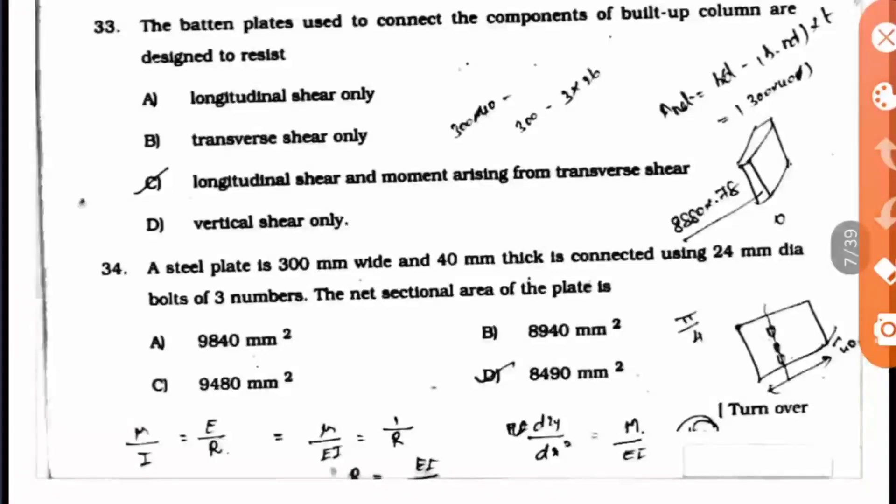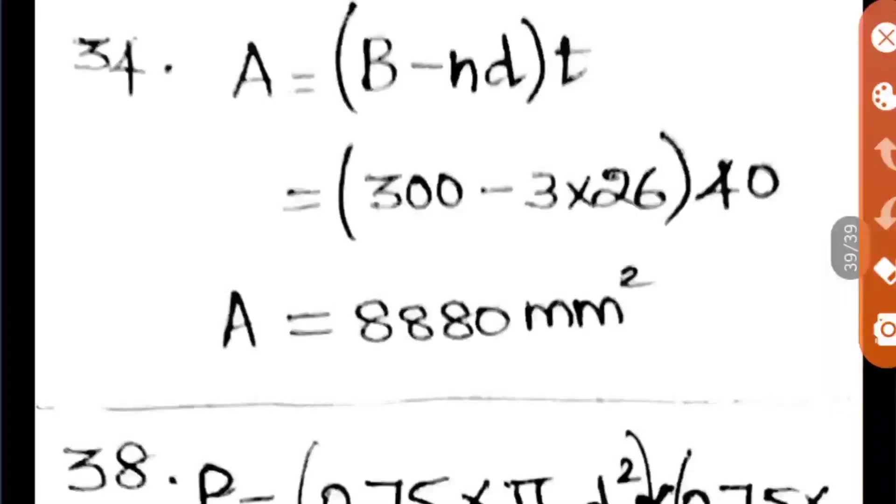Question 34: A steel plate is 300 mm wide and 40 mm thick, connected using 24 mm dia bolts of 3 numbers. The net sectional area of the plate is calculated using the formula: B - (N × D) × T, where B is the width (300 mm), N is the number of bolts (3), and the diameter of the bolt is 24 mm. Always add 2 mm to the bolt diameter when calculating area, so it's 26 mm, times the thickness of 40 mm.